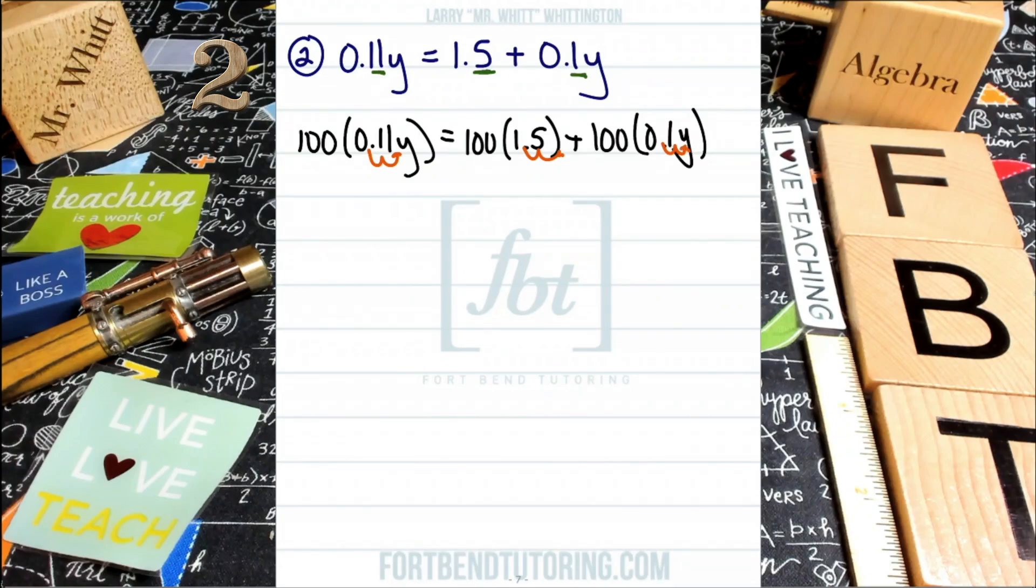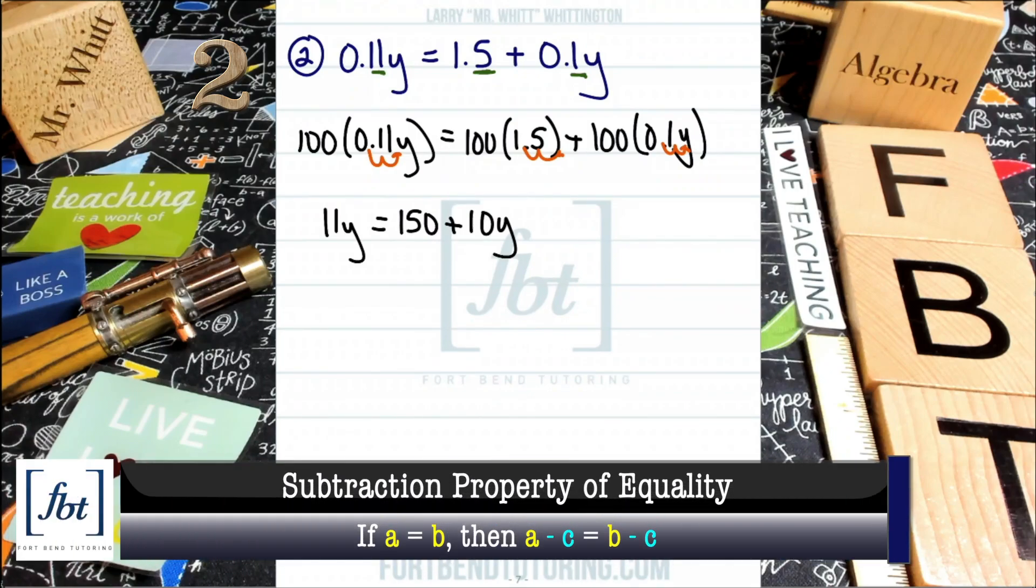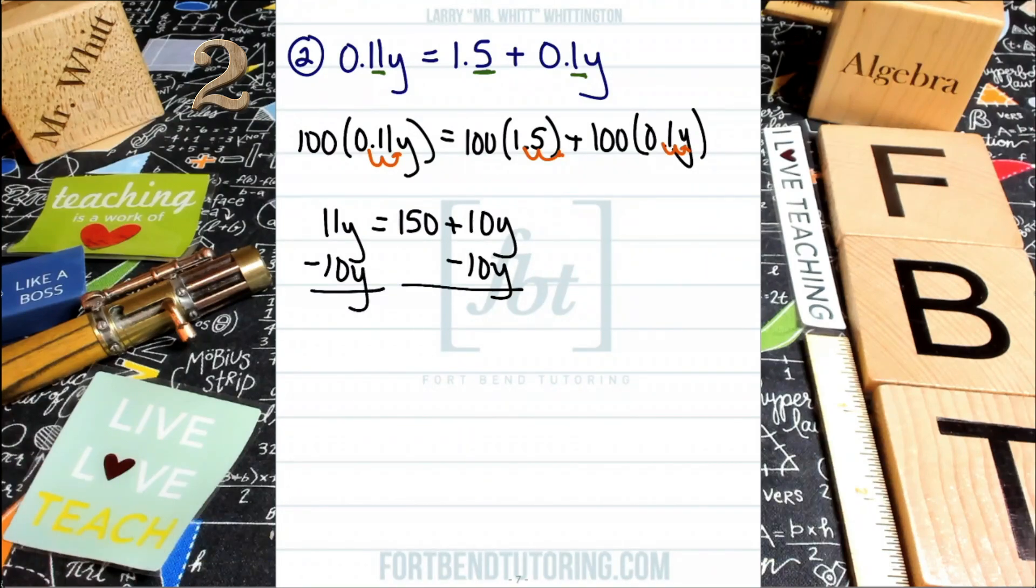So as I bring down my next step, I'm dealing with 11Y equals 150 plus 10Y. That's what I have. And now I'm going to be getting all of my variables on one side of the equation by using the subtraction property of equality. I'll be subtracting 10Y to both sides of the equation like so. And 11Y minus 10Y that gives me one Y. You don't need to write the one from the variable because it's redundant. So you see one Y and therefore you don't need to write the one in front of the Y.